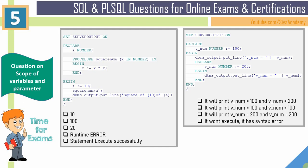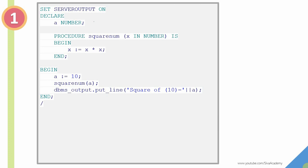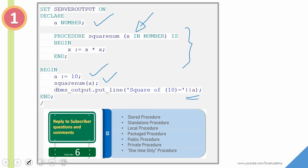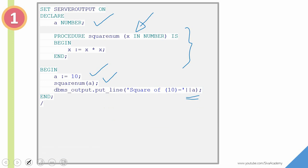In this video, we are going to see two such questions. In the first question, we have an anonymous block where I have declared a variable 'a', and then we have a local procedure which is taking an input and just multiplying the values. I am initializing the variable 'a' with 10, then calling the procedure 'square_name' and printing the value of 'a'. If you want to know what a local procedure, private procedure, or public procedure is, I would suggest you watch that video. The question is: what would be the output of this anonymous block?